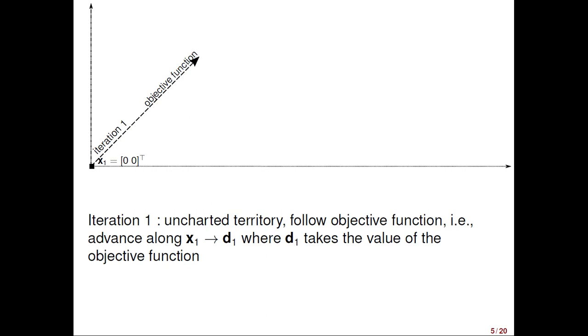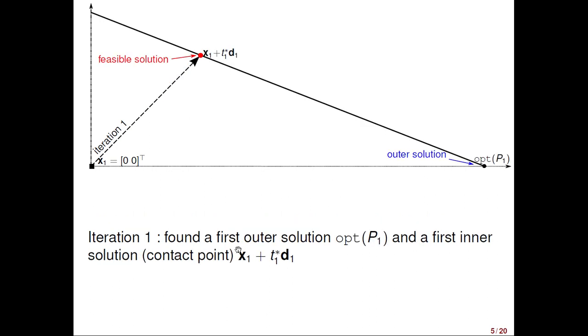We improve the objective function at the highest rate. Let's imagine that the projection subproblem returns this facet and this contact point. Already, from the very first iteration, we have a linear feasible solution, the red disk, the small red circle, and another solution denoted on the right part, opt P1. Now, the goal of the new method will be to get these two solutions closer and closer.